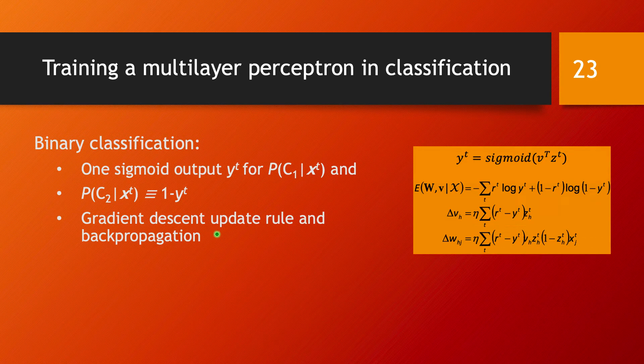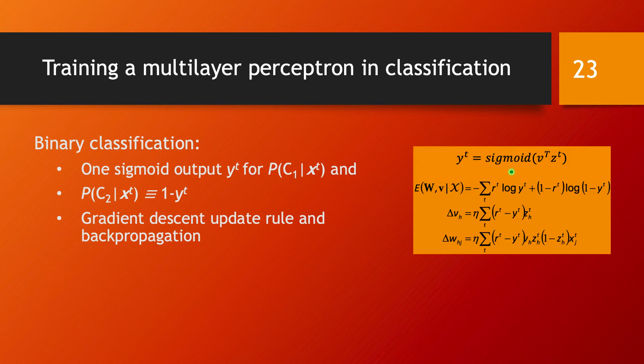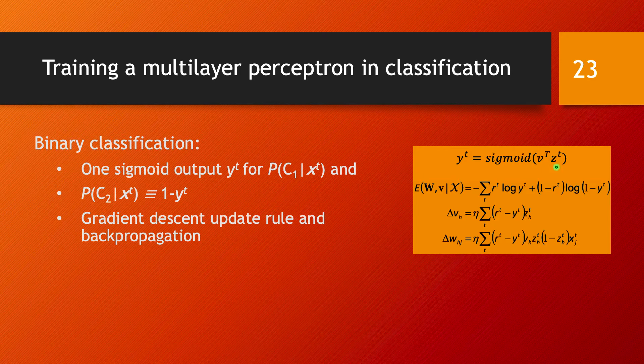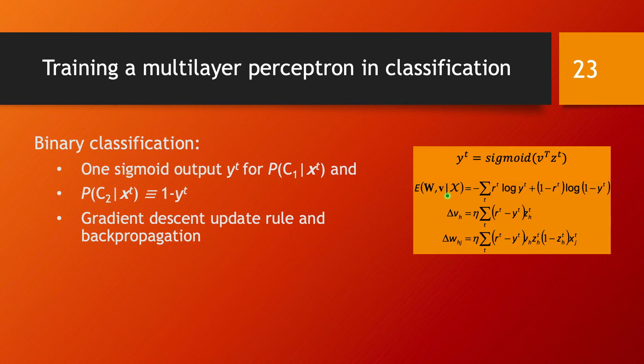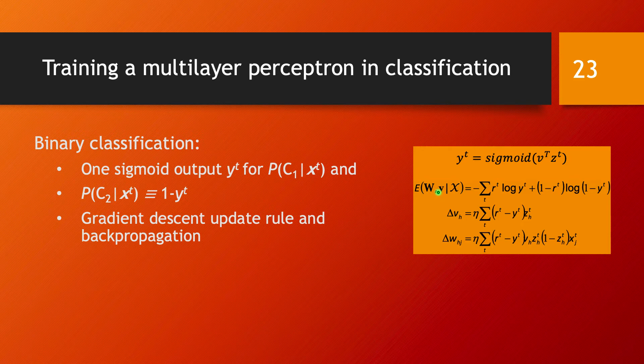What this comes down to is the single output we have is the sigmoid of the linear calculation computed from the hidden layer to the output layer. And then we calculate the error function in the same way as before for classification problems.